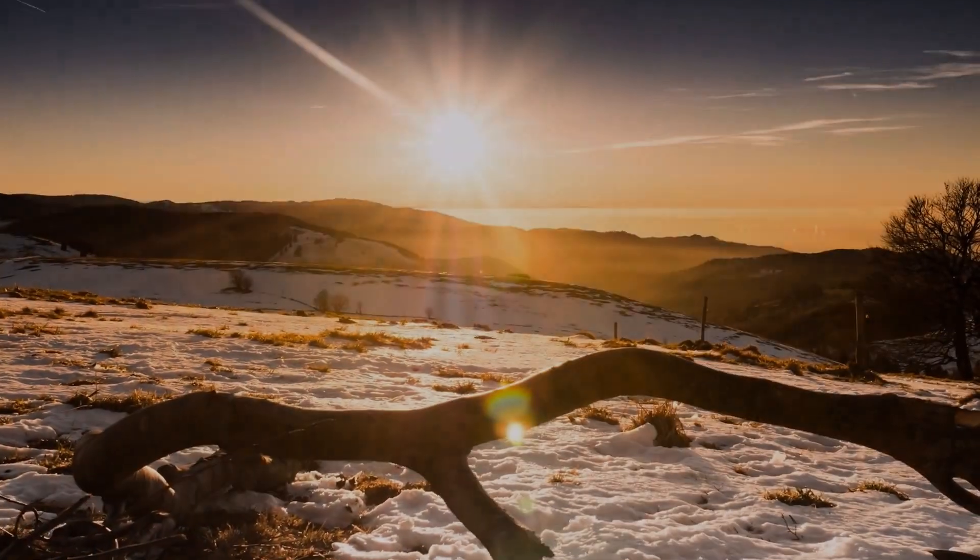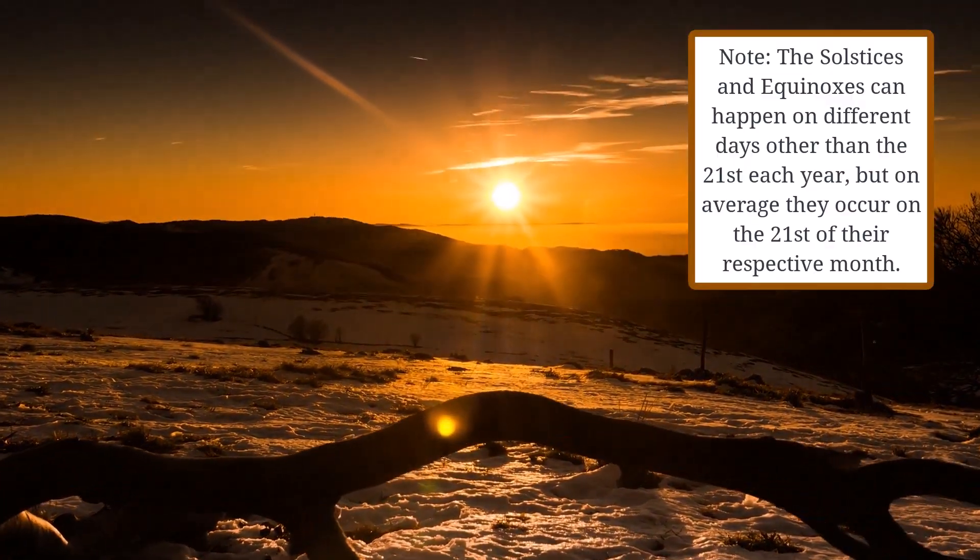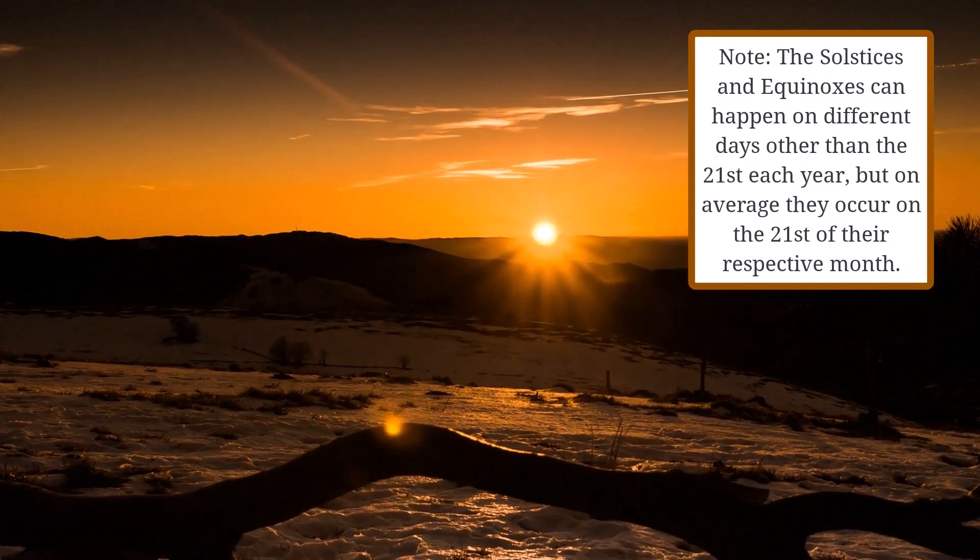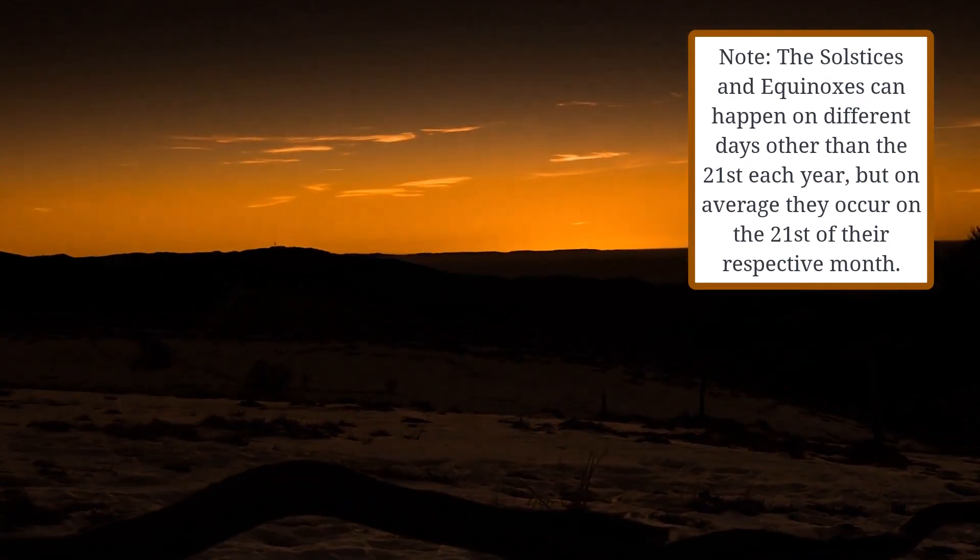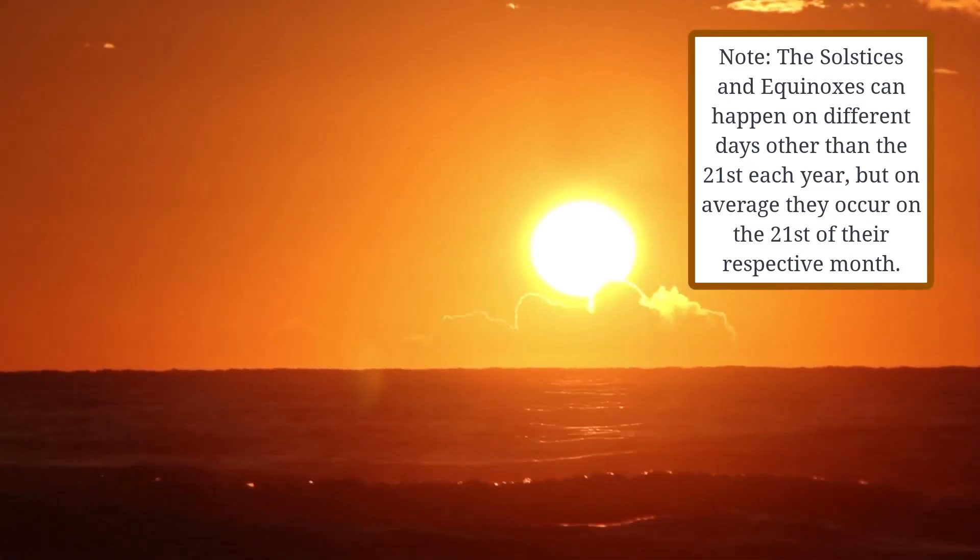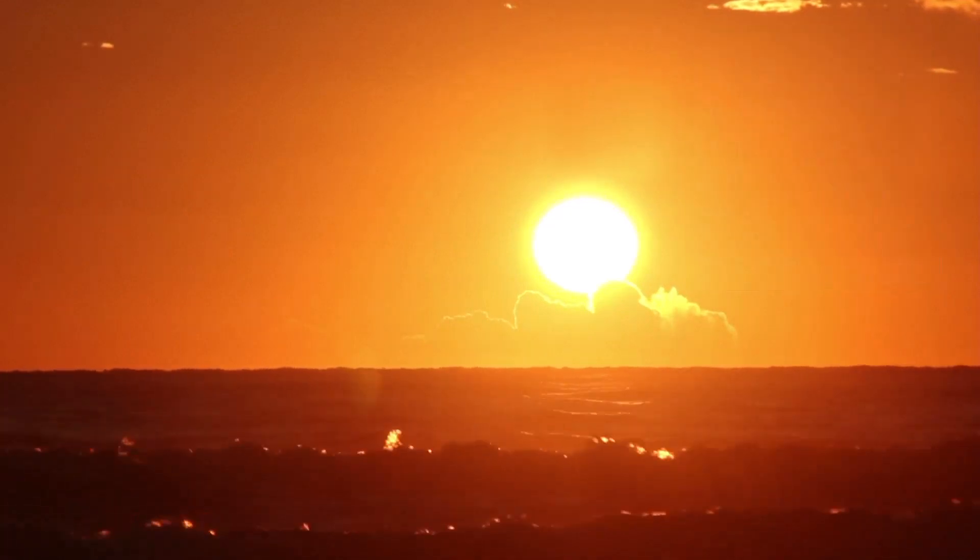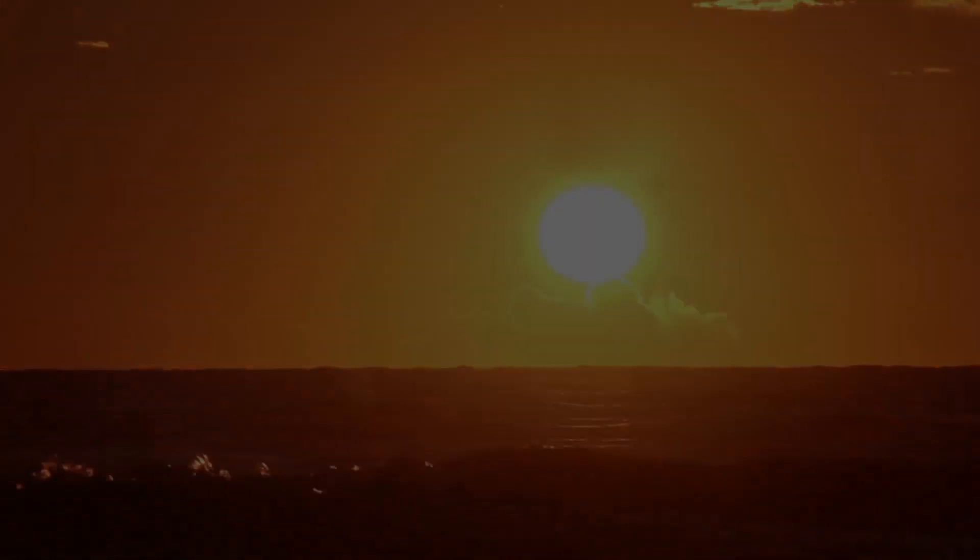These happen on the 21st of June and the 21st of December respectively. The Sun is highest in the sky during the summer solstice and lowest during the winter solstice. Solstice literally translates to Sun standing still and this makes sense as the Sun reaches its extreme points in the sky on these days and stands still before changing direction.